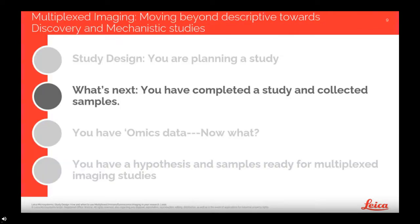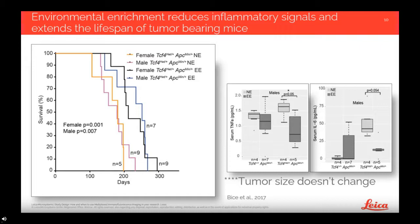Once the study design is complete and you've conducted a well-powered study and samples are collected, you can explore the research questions considered during the study design process. We set out to define whether exposure to a stimulating environment extended the lifespan of tumor-bearing animals. We found significant improvement in lifespan in both male and female enriched animals, an extension of 55 and 82 days — an impressive increase of one-quarter to one-third of their lifespan. In male mice, environmental enrichment reduced systemic levels of two inflammatory biomarkers, suggesting the mechanism may involve reduced inflammation.